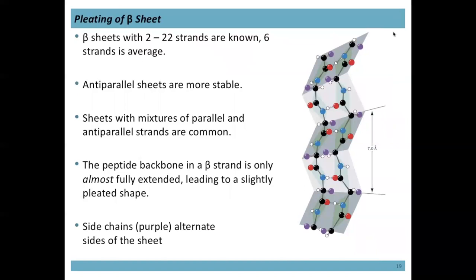The peptide backbone of the beta strand is almost fully extended but not completely, leading to a slight pucker — these were commonly called beta pleated sheets. The side chains alternate which side of the sheet they point toward: one residue points above the sheet and the next points below.